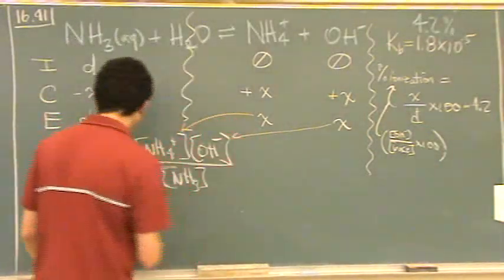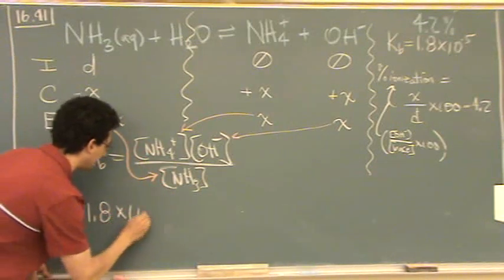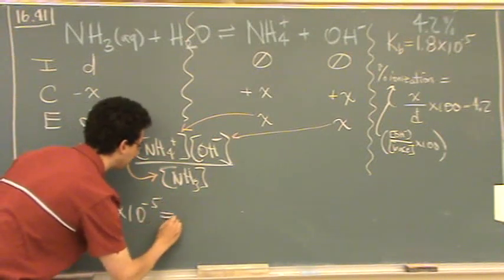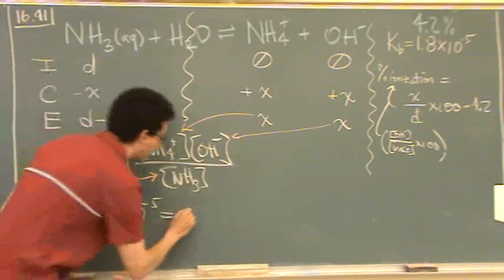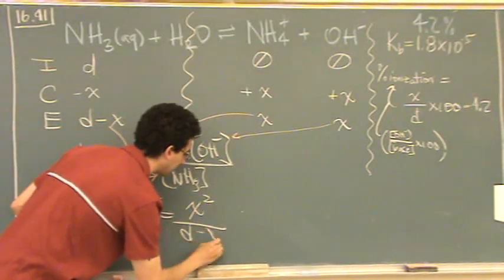And I know kb also. So 1.8 times 10 to the minus 5 equals x squared over d minus x.